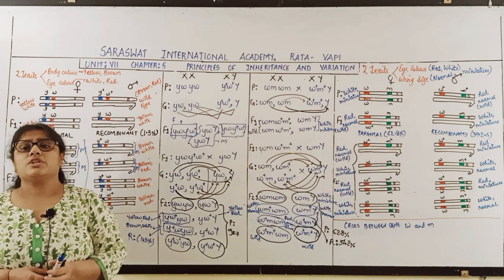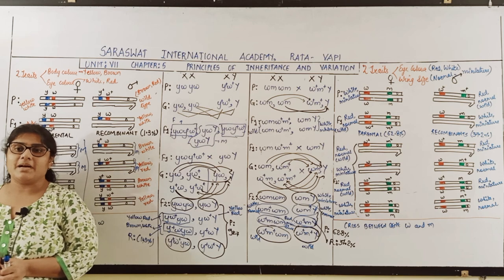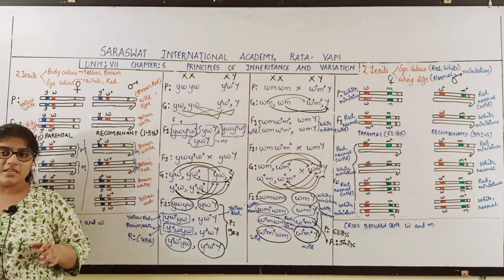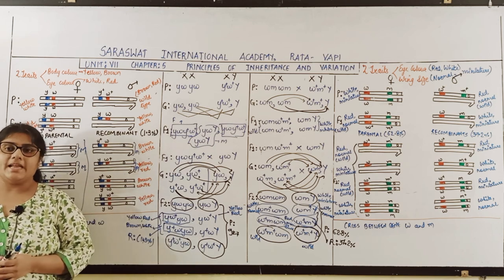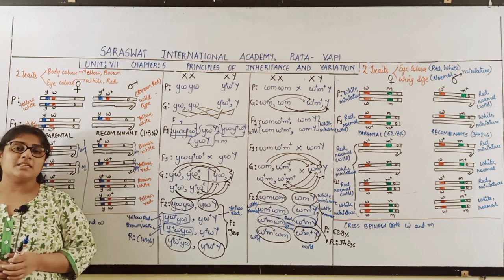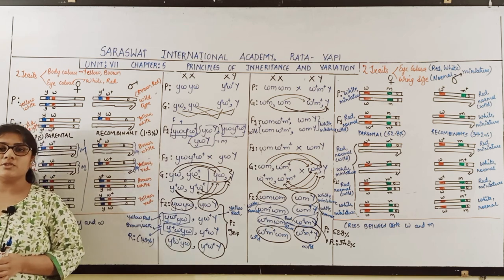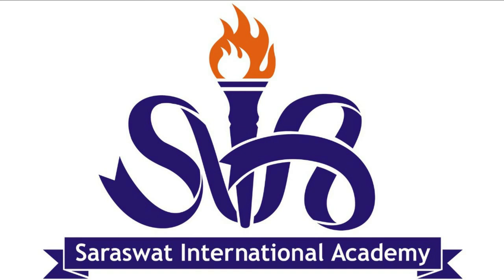In summary, these two crosses in Drosophila demonstrate that in the first cross (body color and eye color), the distance between genes was less, giving only 1.3% recombinants. In the second cross (eye color and wing size), the distance between genes was more, giving 37.2% recombinants. Today's lecture ends here. Thank you, students.